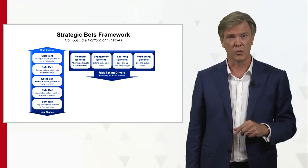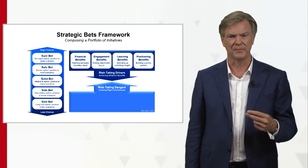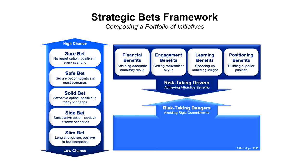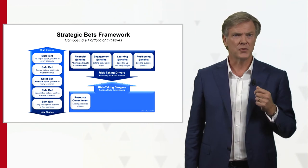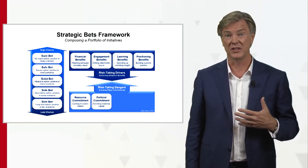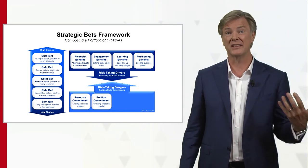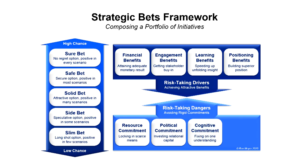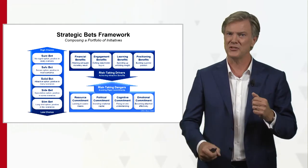There are also reasons why you don't want to take a risk — what we call risk-taking dangers. All of these dangers are commitments that, once made, get you stuck. There are resource commitments of money, time, and effort that you can't take back. There are also political commitments where it's difficult to take a side exit, cognitive commitments where you get stuck in a way of thinking, and emotional commitments where you fall in love with an option and want to hold on to it.